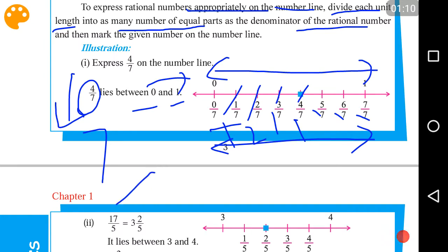you can see 17 by 5 rational number, and if we express it in the mixed term fraction, then it becomes 3 times 3 plus 2 by 5. So what happens is, we have to now divide between 3 and 4, the unit length,